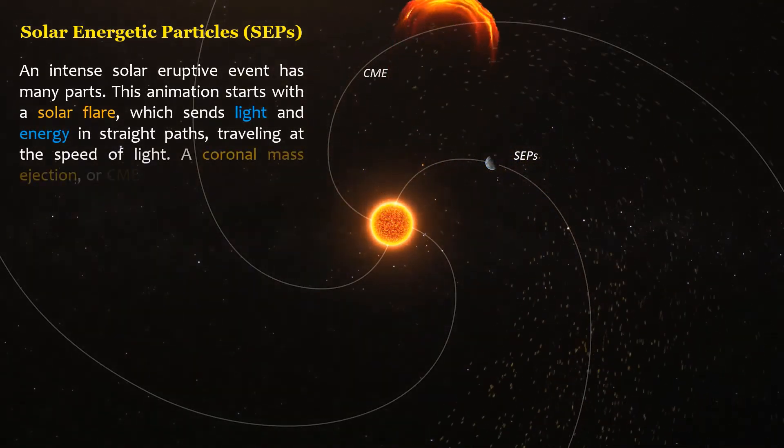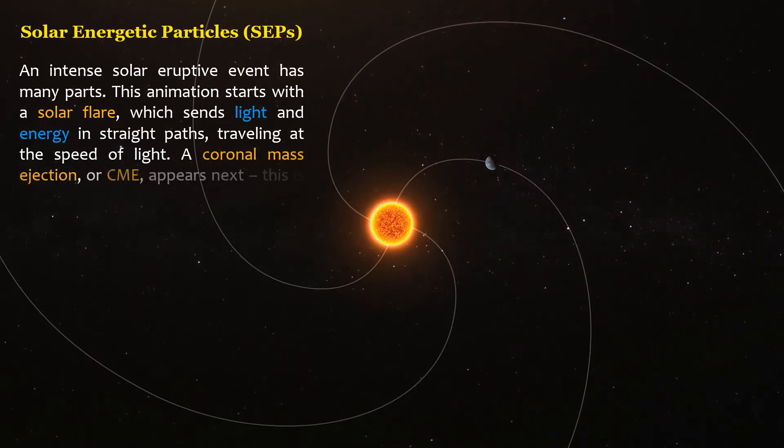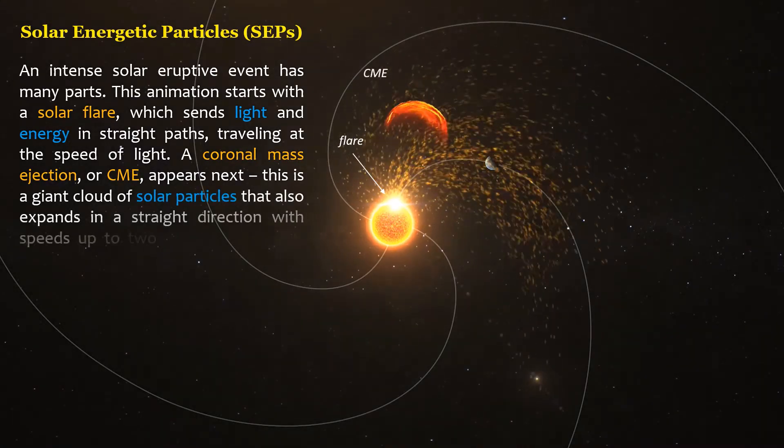A coronal mass ejection, or CME, appears next. This is a giant cloud of solar particles that also expands in a straight direction with speeds up to 2,000 miles an hour.